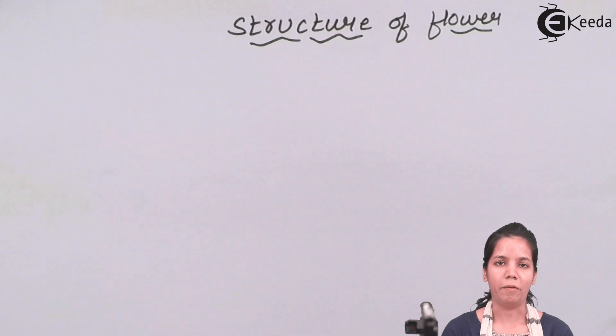Structure of a flower. We all have seen a flower which is bright in color and smells very good, but do we know that a flower has a lot of parts in it and those parts are very essential to the flower? Let's start one by one, what are those parts?